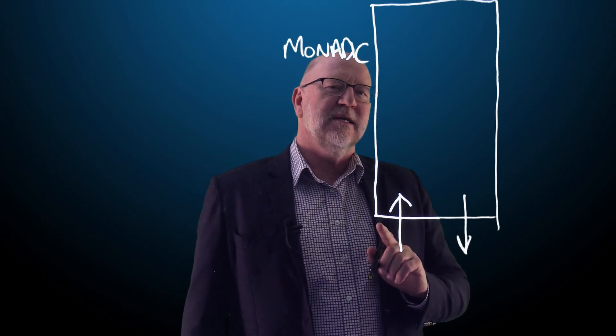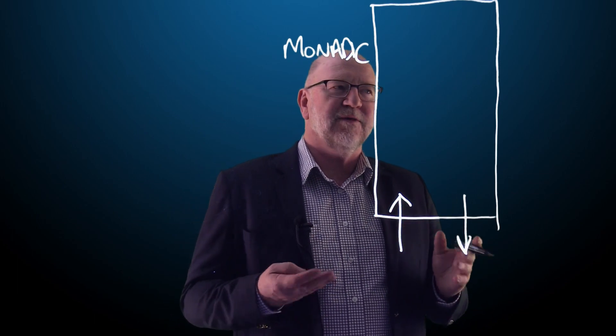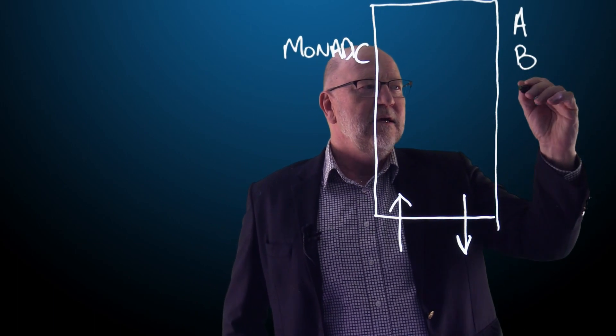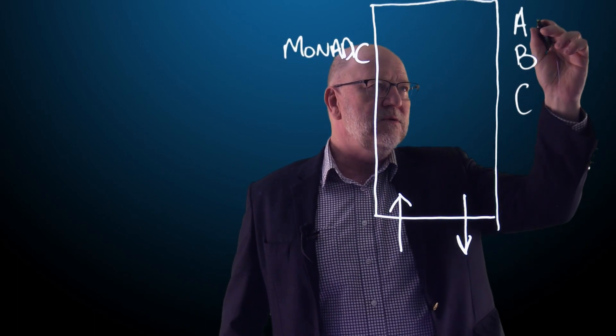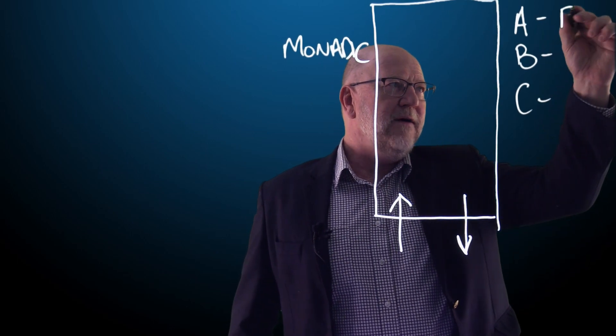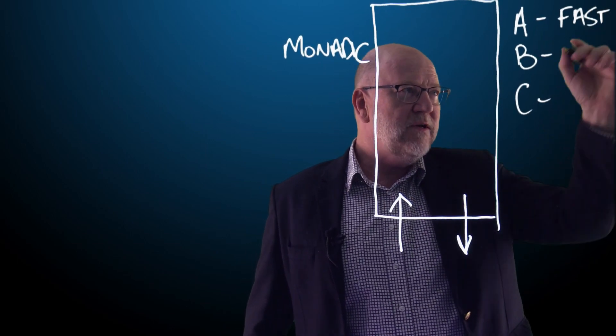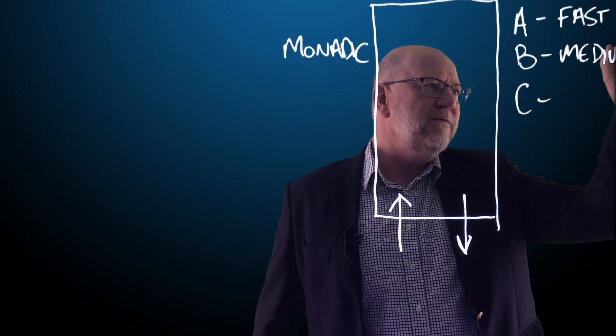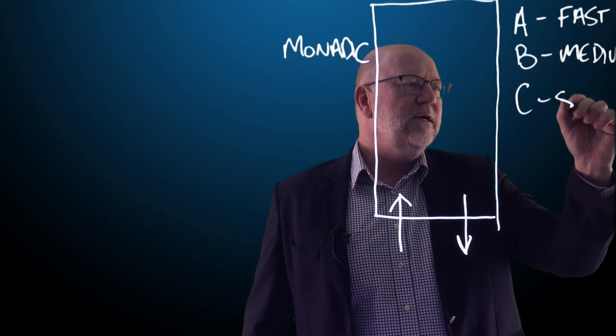A triadic warehouse is determined by three factors. First of all, we have A class, B and C class goods. A being fast. These are fast moving goods. B being medium in terms of velocity and C being slow.